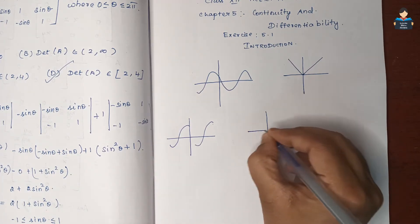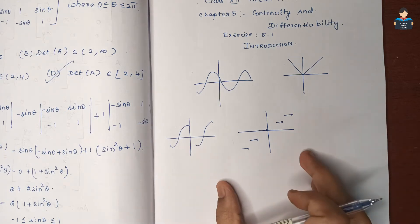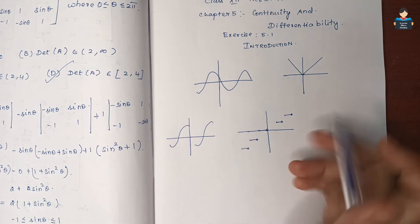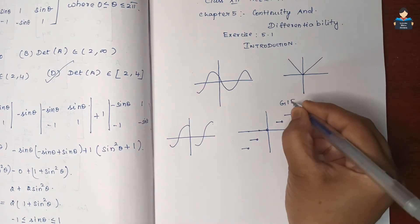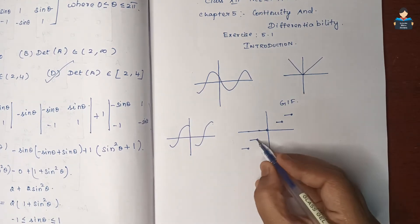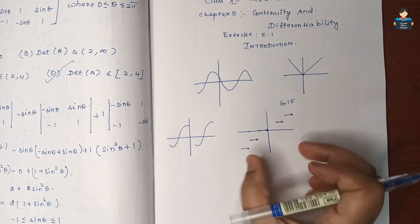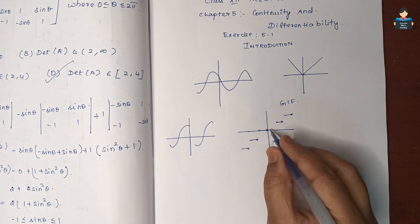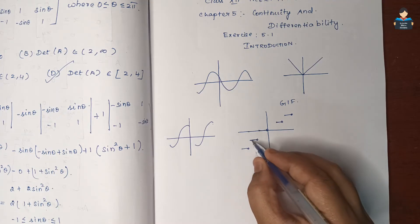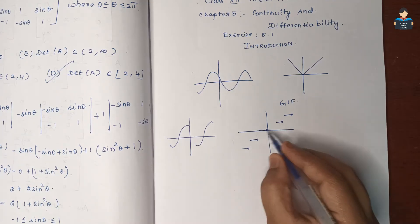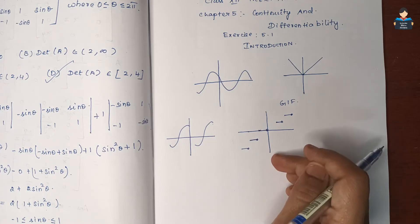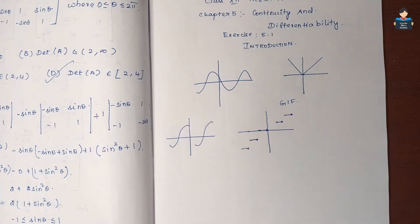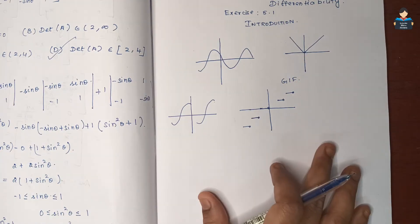Now, this is the graph for the greatest integer function. This is not continuous — this is discontinuous. Another example of discontinuity.